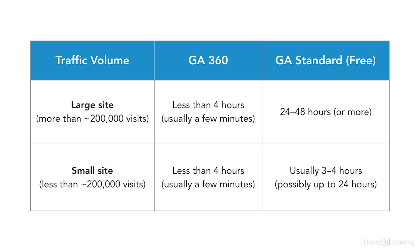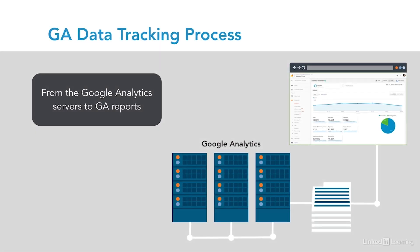It's worth noting that if you have more than 10 million hits per month, Google may force you onto the paid 360 version entirely. Once Google's finished processing this information in that four to 24-hour time frame, the organized data is going to be delivered to the user-friendly interface available to you within the Google Analytics platform. Here, you'll be able to view the numerous reports and the behavior of users, which we're going to dive into in the rest of this course.